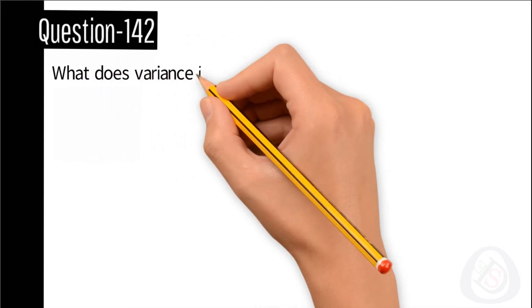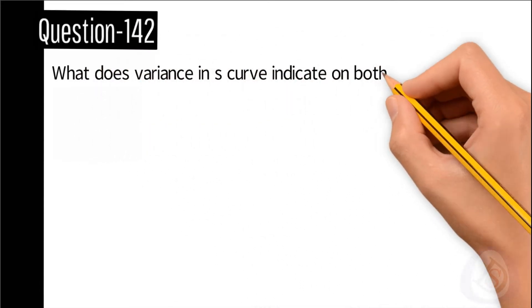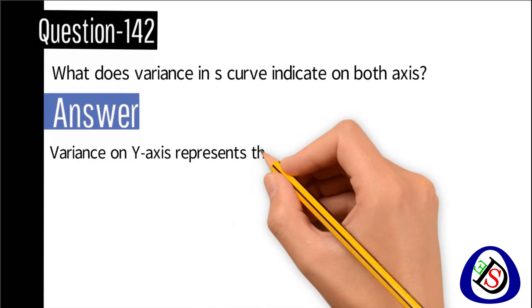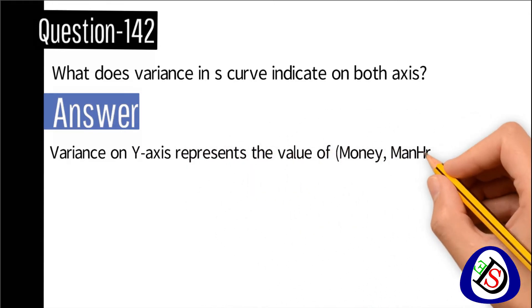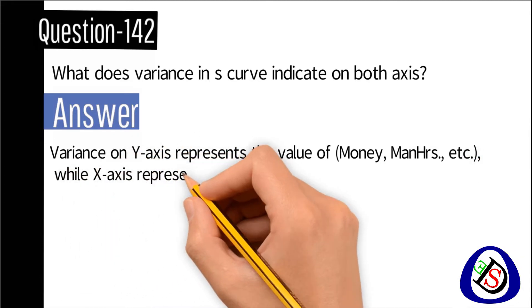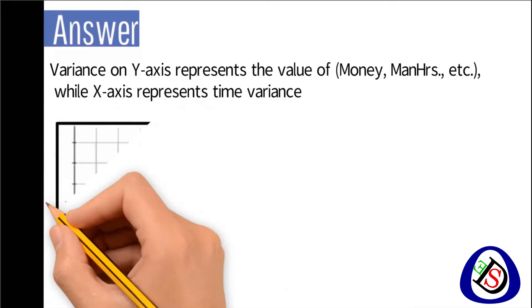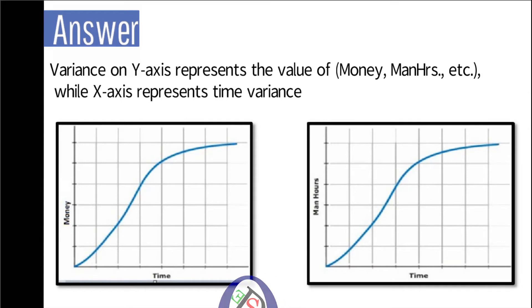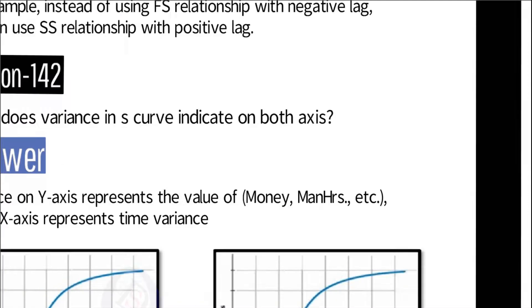Question number 142: What does variance in S curve indicate on both axes? Answer: Variance on y-axis represents the value of money, man hour, etc., while x-axis represents time variance. You can see in the first graph time and money comparison, and in the second graph time and man hour comparison.